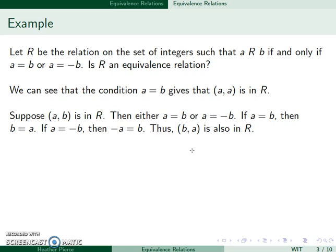If (A, B) is in R, then we have two conditions: either A is equal to B, or A is equal to negative B. If A is equal to B, then B is also equal to A. If A is equal to negative B, then negative A is equal to B. So either way, (B, A) is also in R, meaning the relation is symmetric.